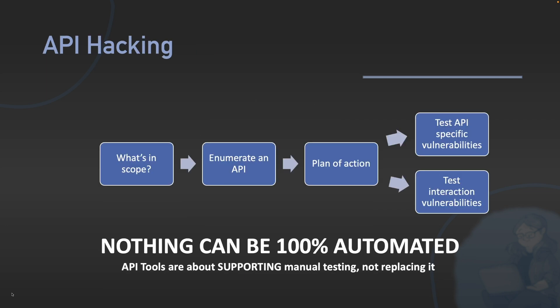So let's talk API hacking. When we think about API hacking, this is the overall workflow we use. We first ask ourselves what's in scope — what parts of the API are in scope, what parts of the website are in scope, are there anything off limits? We then look for enumeration, which is where we start to find every individual API endpoint. When we think about scope, we're asking the question: is there an API there? When we're talking about enumeration, we're saying what exactly is in that API.